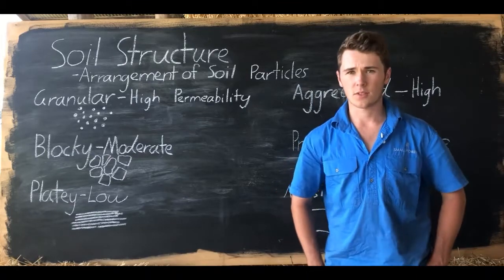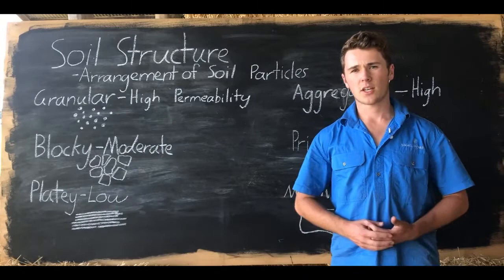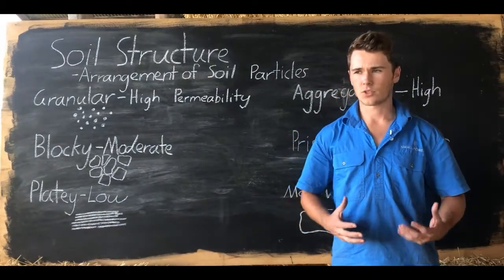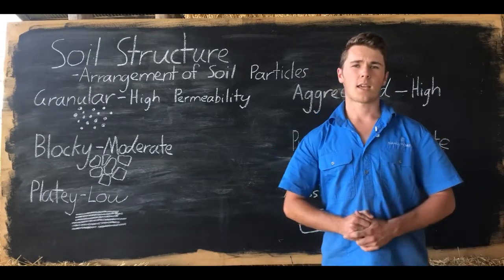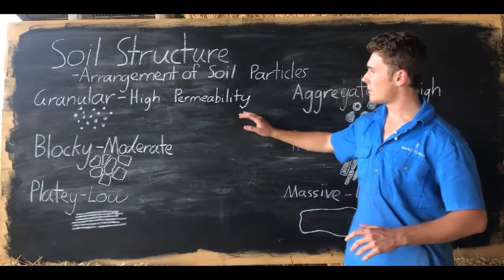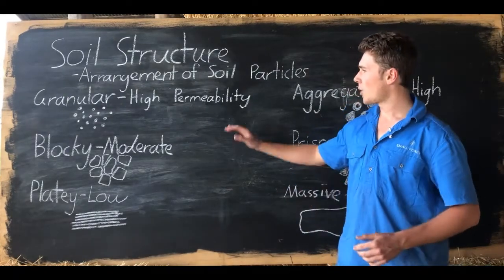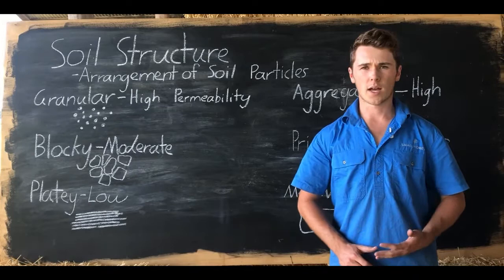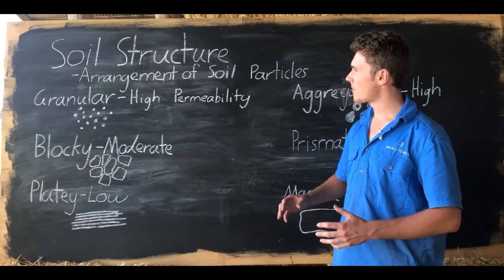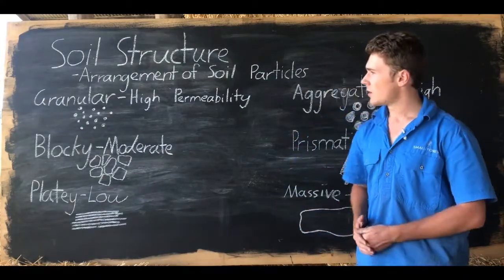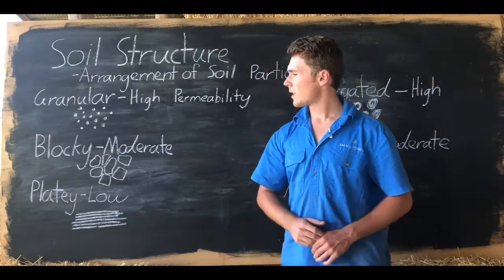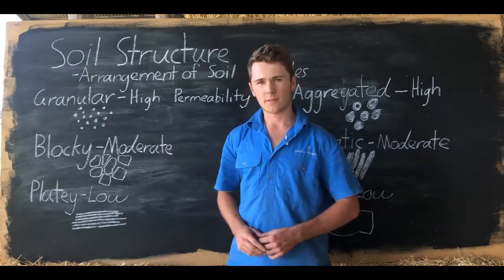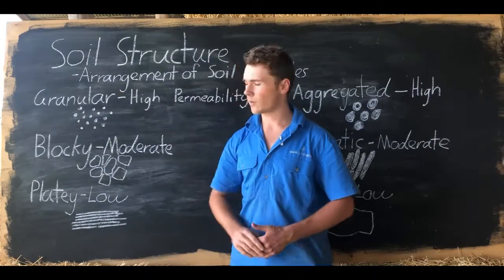Our next most important physical characteristic of our soil is soil structure. Soil structure is the arrangement of our soil particles into groups called peds or aggregates. There are six basic structures and we'll go through the structures and their permeability. Permeability refers to how easily things can move through the soil — things such as air, water and roots. With high permeability we have granular, which is quite small and has a high permeability because of the small peds, allowing roots, water and air to freely move between the soil particles.